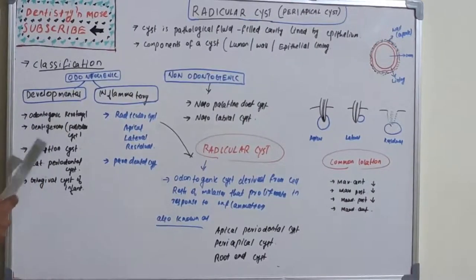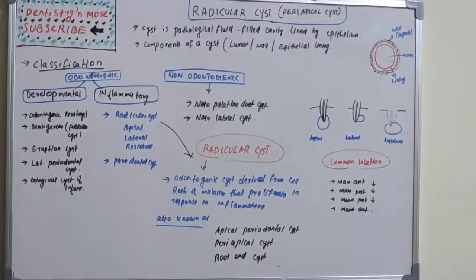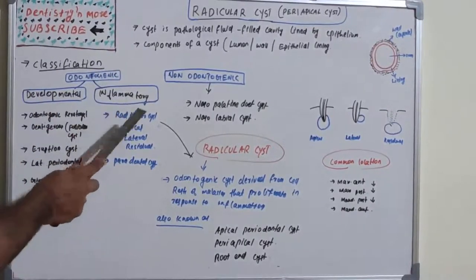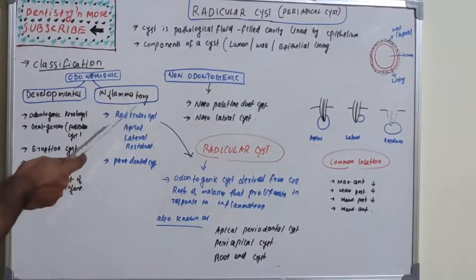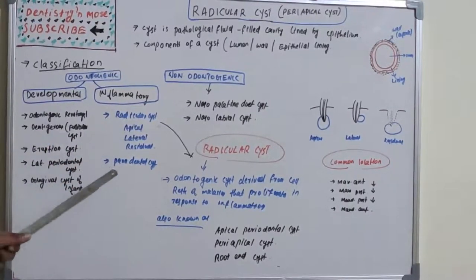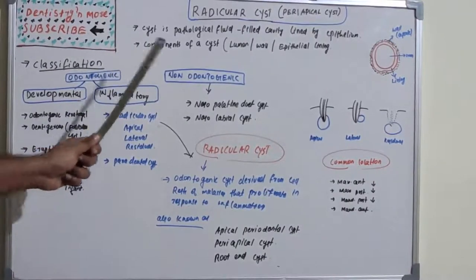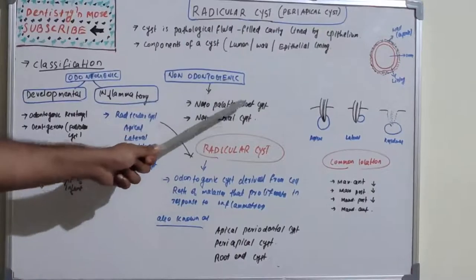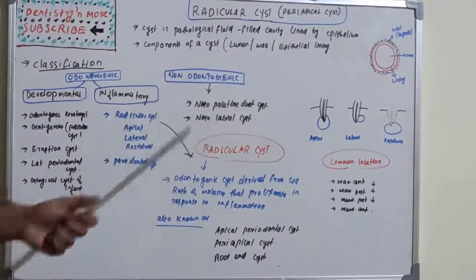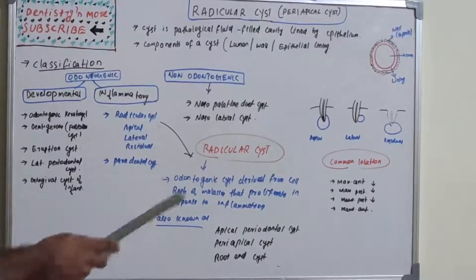In developmental cysts, we have odontogenic keratocyst, dentigerous or follicular cyst, eruption cyst, and lateral periodontal cyst. In inflammatory cysts, the most common one is radicular cyst, which has three types: apical, lateral, and residual. Another inflammatory cyst is paradental cyst.